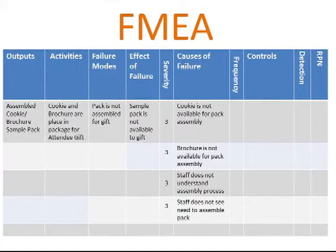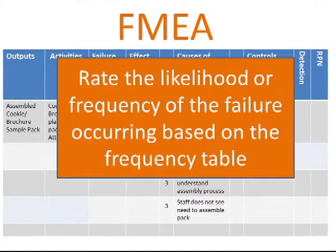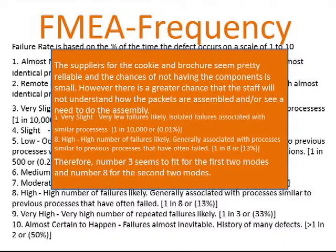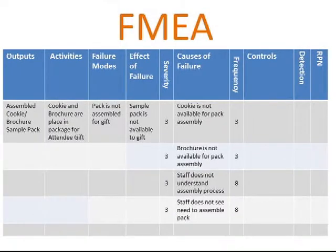Next, you look at the causes of failure — these are the mechanisms that could potentially cause the defect or error to occur. You would then make your second assessment rating, which is the frequency rating. This is an indication of the amount of time that you believe this defect would occur on a scale of 1 to 10: 1 meaning it almost never happens, 10 meaning it's going to happen all the time. Exhibitors make this assessment using the frequency table and then place the appropriate number in the frequency column.